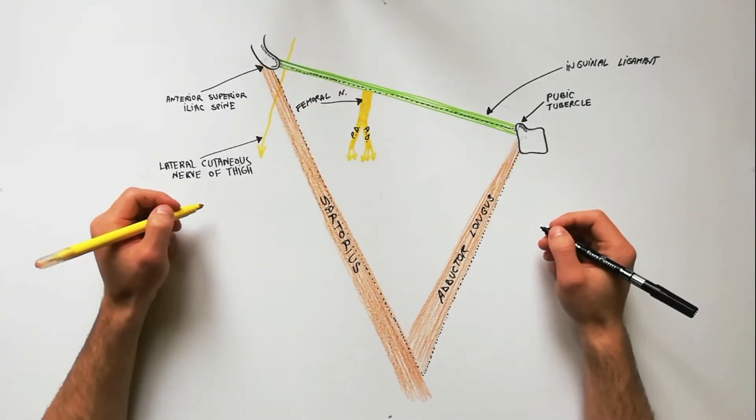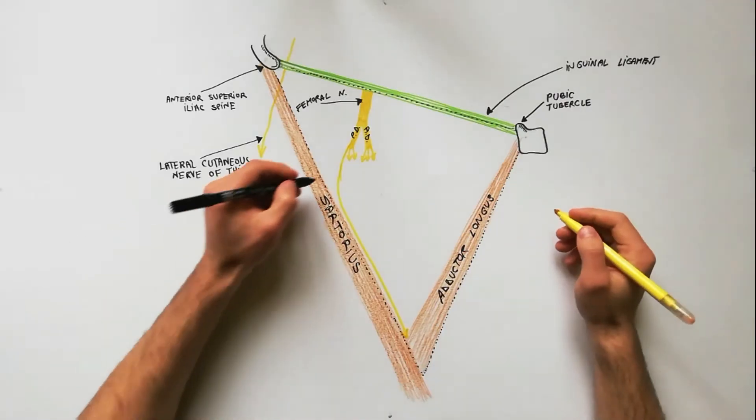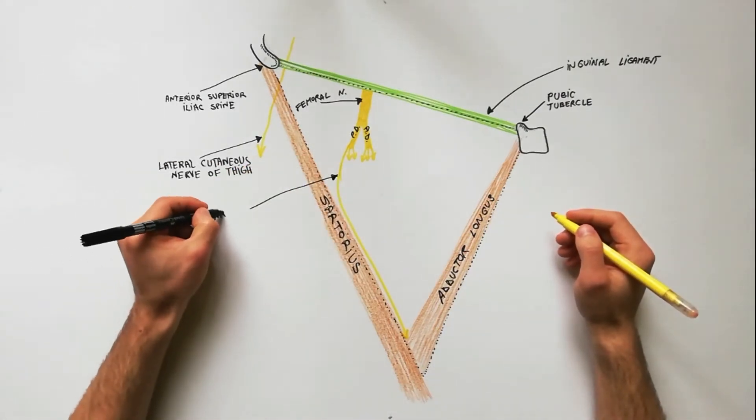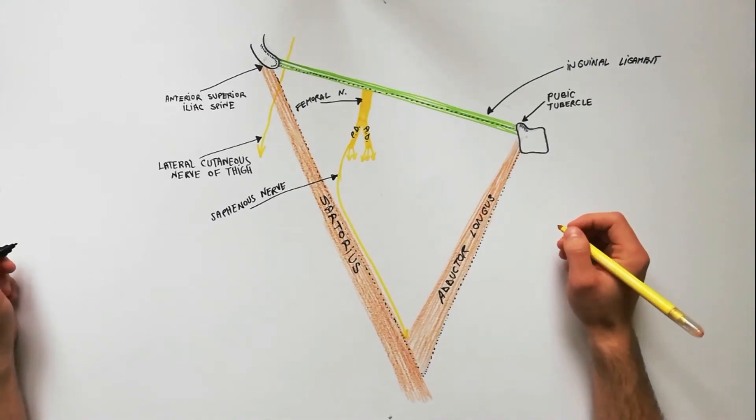The saphenous nerve is a branch from the posterior division of the femoral nerve. After its origin, the saphenous nerve approaches the apex of the femoral triangle.